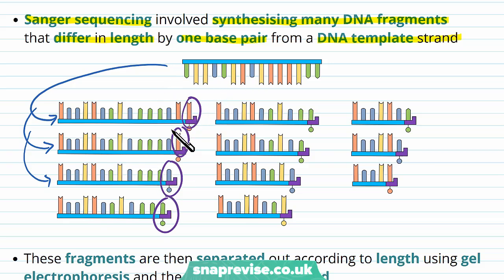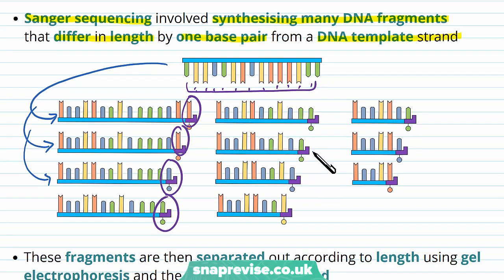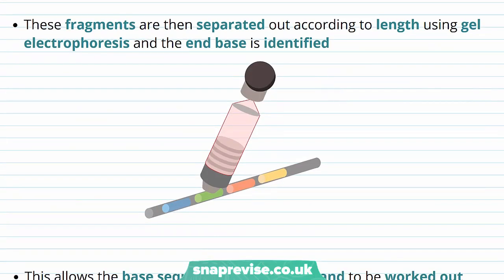Just understand that the Sanger sequencing method involved all of these different fragments, complementary and template to that original strand, based on different lengths differing by only one nucleotide. Eventually in the process, these fragments are then separated out according to length using gel electrophoresis, and the end base is identified.